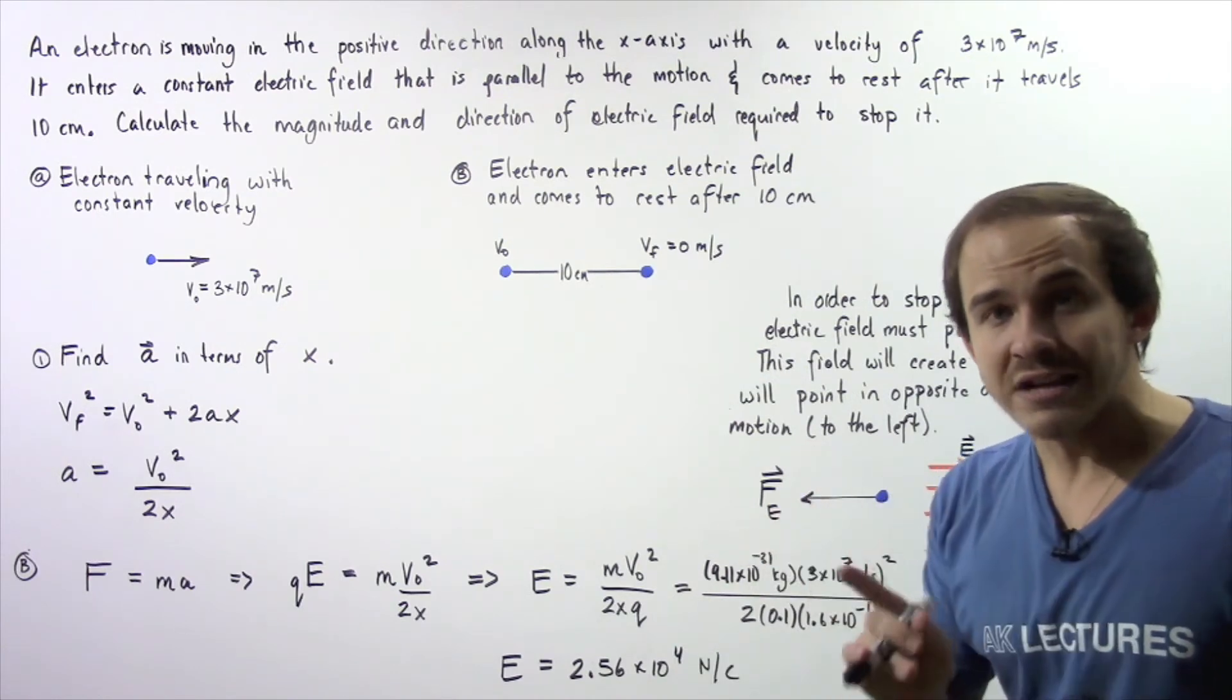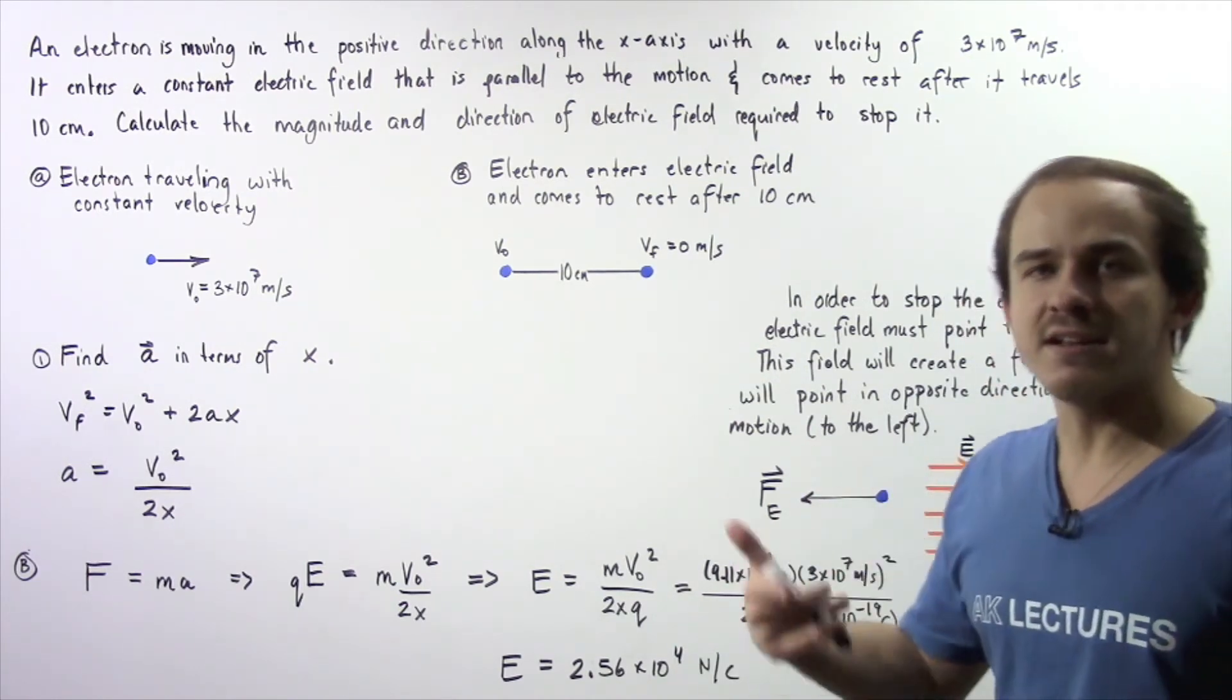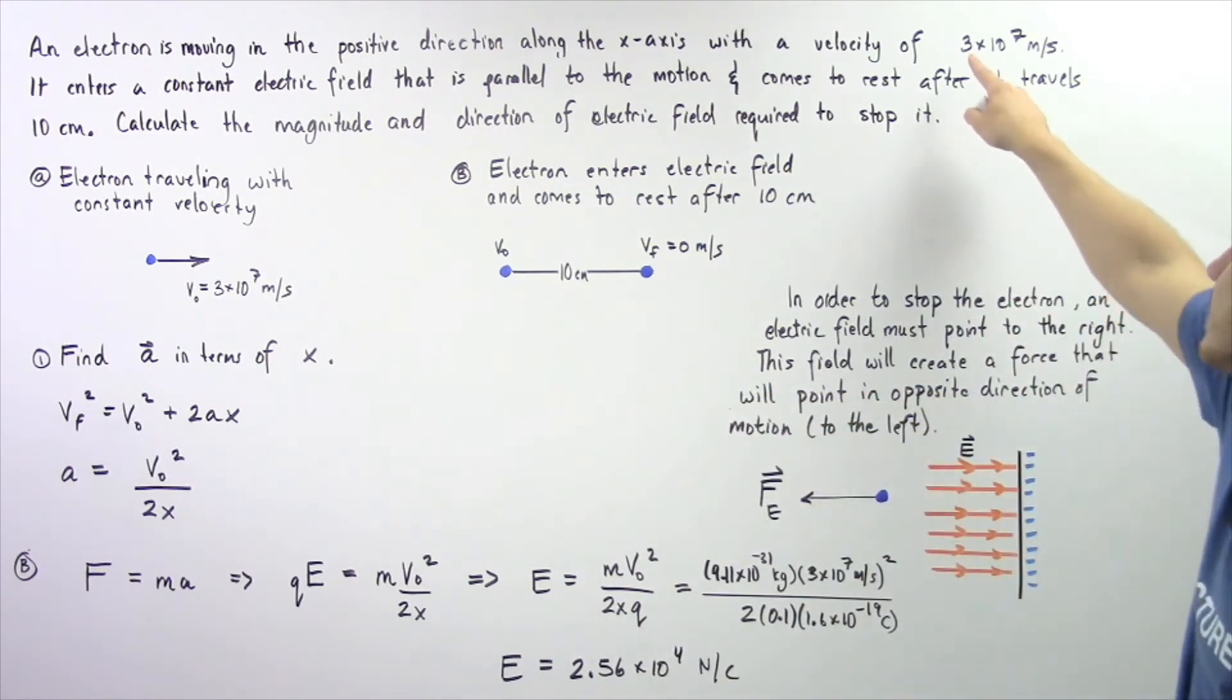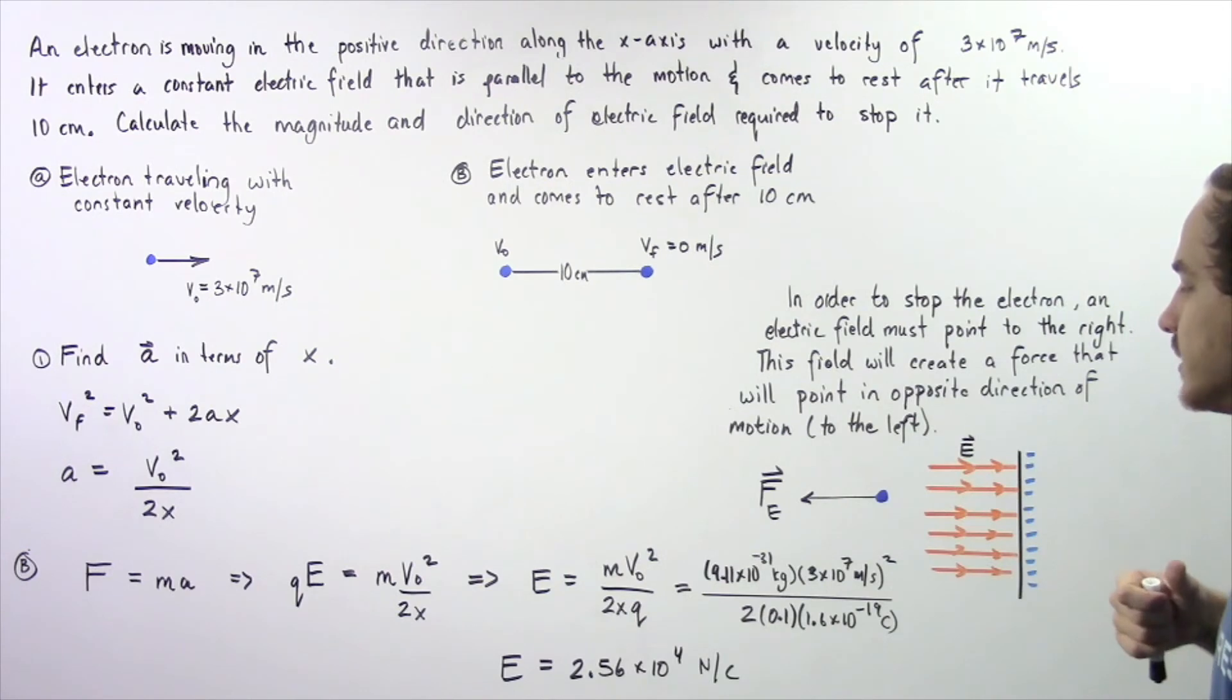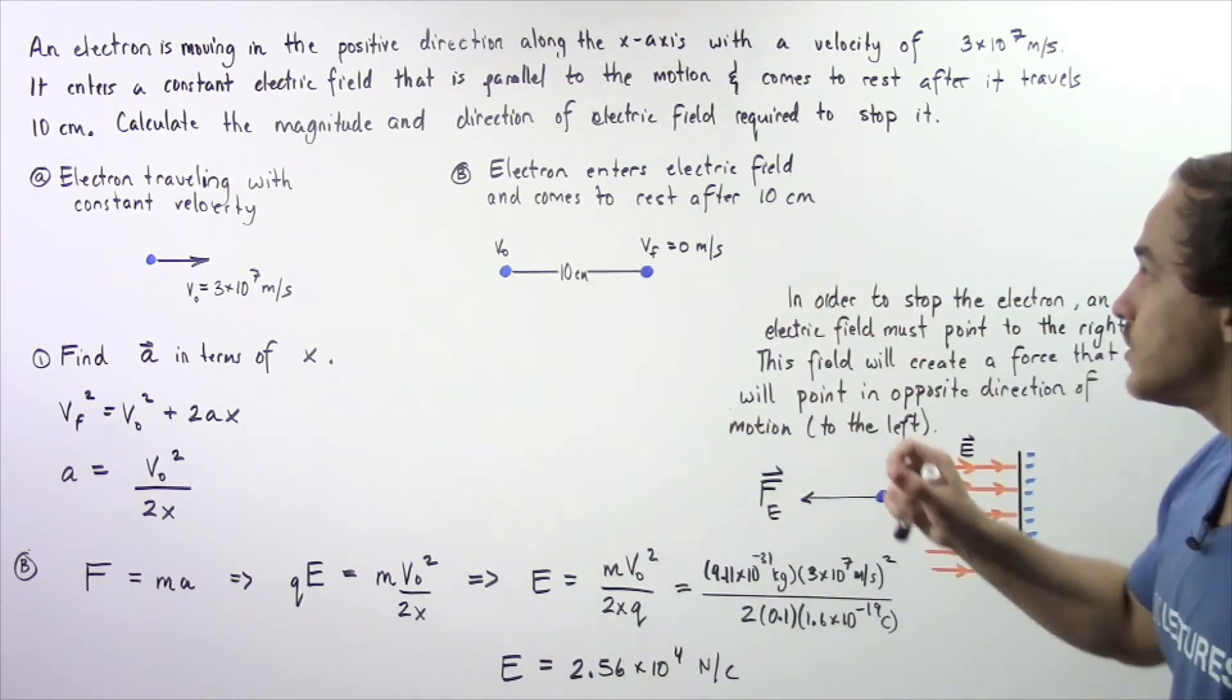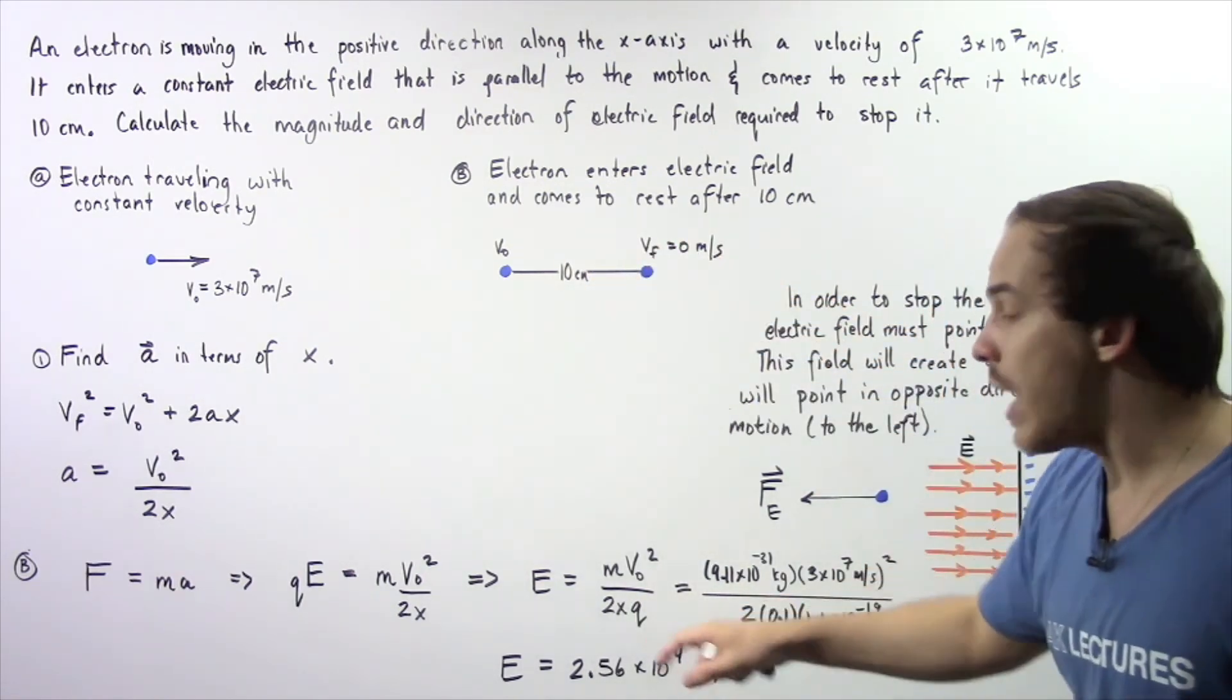The mass of one electron is 9.11×10^-31 kilograms. Our initial velocity squared is (3×10^7)^2. Our x is 0.1 meters (converted from centimeters to meters), and our q, the charge of one electron, is 1.6×10^-19 coulombs.